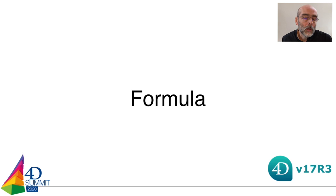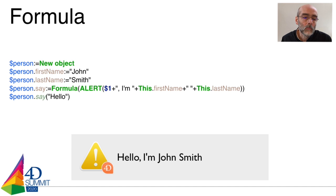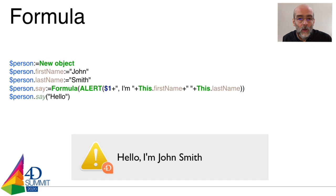The second important thing we added to the 4D language is the formula. Formula is a new kind of object which encapsulates a single line of 4D code, and this 4D code is able to access the properties of the object on which the formula has been applied. For example, I have a person object with a first name and a last name, and a 'say' property of kind formula that calls the alert command to display the first name and last name.